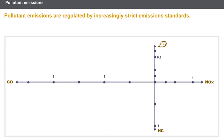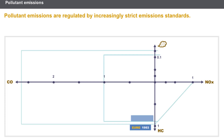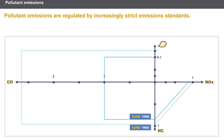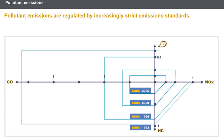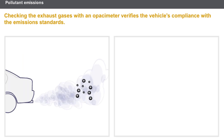Pollutant emissions are regulated by increasingly strict emissions standards. You can see how these standards have changed on the graph. The opacity of the exhaust gases results from the presence of carbon particles produced from the combustion of diesel fuel.